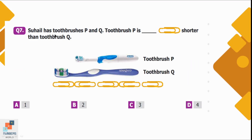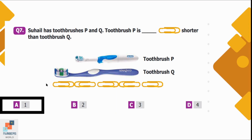Question number 7: There are two toothbrushes P and Q. Toothbrush P is how many paperclips shorter than toothbrush Q? The length of toothbrush Q is almost equal to 4 paperclips and the length of toothbrush P is almost equal to 3 paperclips. The difference is 1 paperclip. Option A is correct — toothbrush P is 1 paperclip shorter than toothbrush Q.